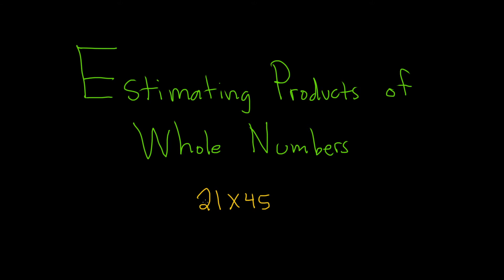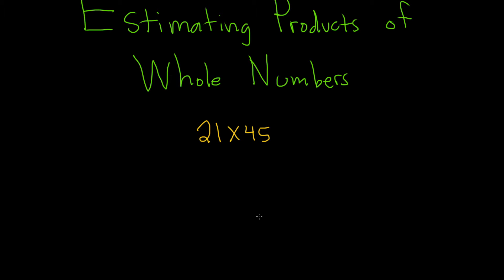And you want to compute this relatively quickly. What you would do is you would round to the highest place value. So here, the highest place value is the tens place. So you round this to the nearest ten. There's a 1 here, so you round this down to 20.